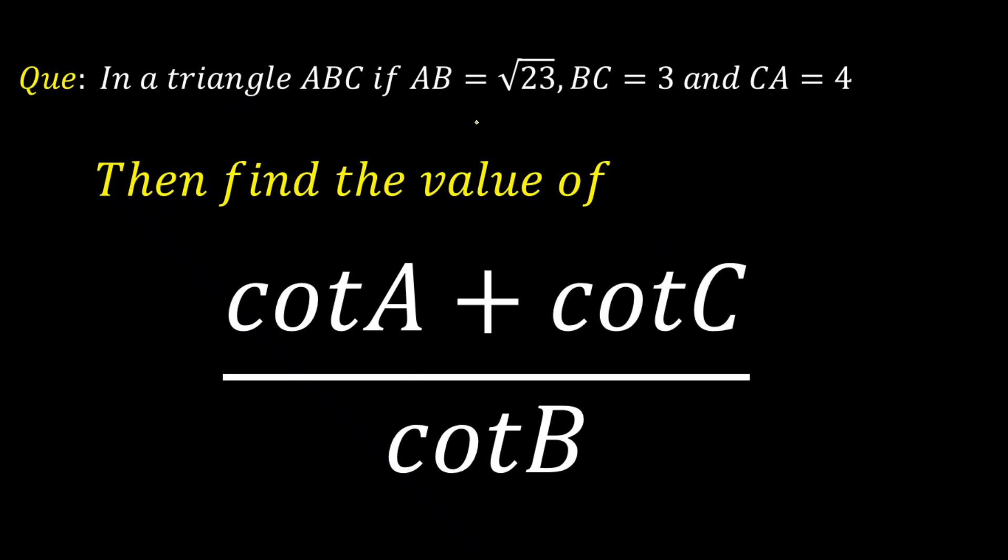So the question is, in a triangle, if all the sides are given, AB, BC, and CA are given as root 23, 3 and 4. Then you need to calculate the value of cot A plus cot C upon cot B. Now here A, B, C are the angles of the triangle.